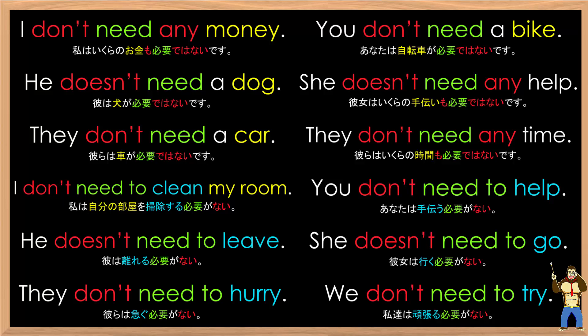Now you read the sentences: I don't need any money. You don't need a bike. He doesn't need a dog. She doesn't need any help. They don't need a car. They don't need any time. I don't need to clean my room. You don't need to help. He doesn't need to leave. She doesn't need to go. They don't need to hurry. We don't need to try.